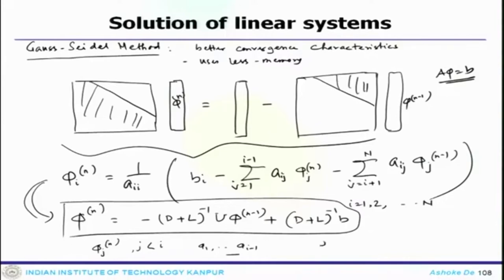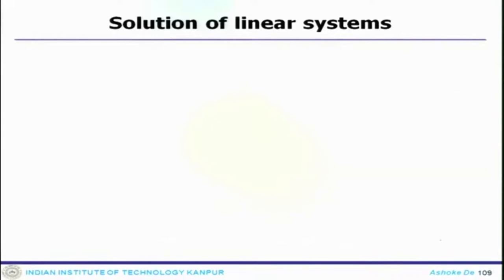The spectral radius of the iterative matrix must be less than 1 for convergence. In some exceptional cases Jacobi method can converge faster, but Gauss-Seidel is generally the preferred one.